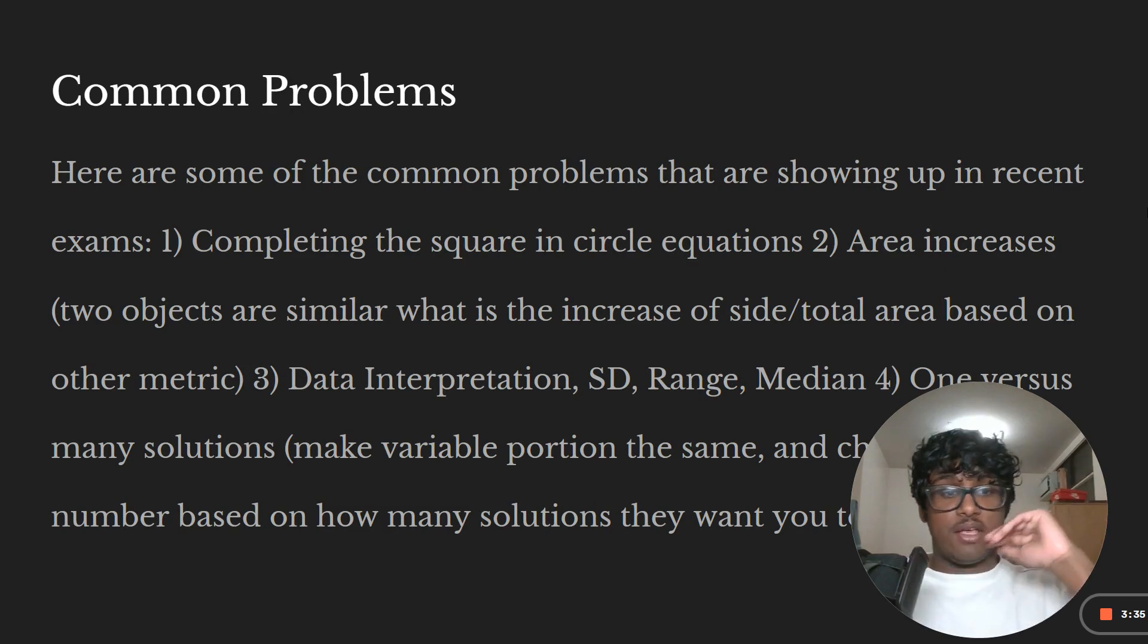Okay, I'm going to come up with all the really common problems in August and in October and all the things that I've heard from students who've taken the exam as well as stuff I've seen from the October QAS. Here's some of the common problems that are showing up. So the number one thing that I think so many students actually don't know, but it's shown up twice in a row. And I really think that it's going to show up November or December or both is completing the square in circle equations.